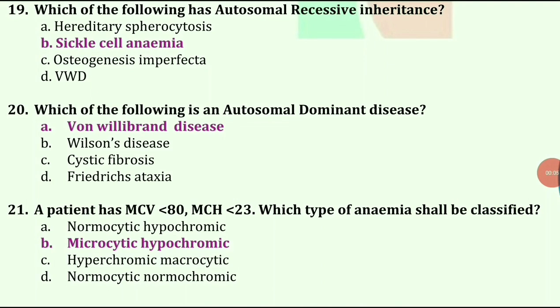Which of the following is an autosomal dominant disease? Options are von Willebrand disease, Wilson's disease, cystic fibrosis, and Friedreich's ataxia. The answer is von Willebrand disease.